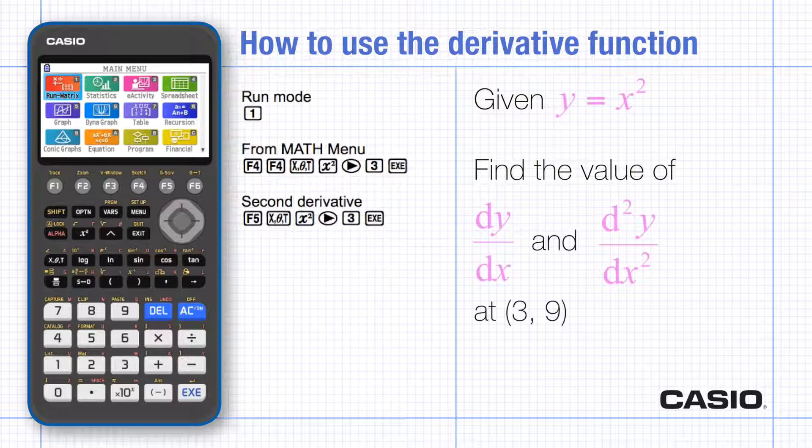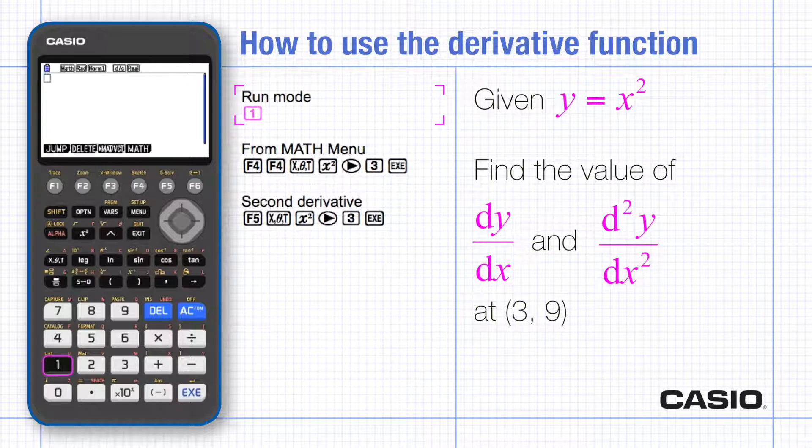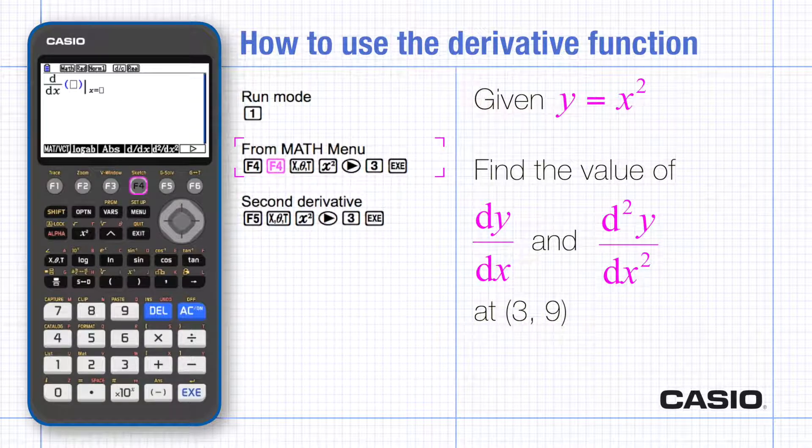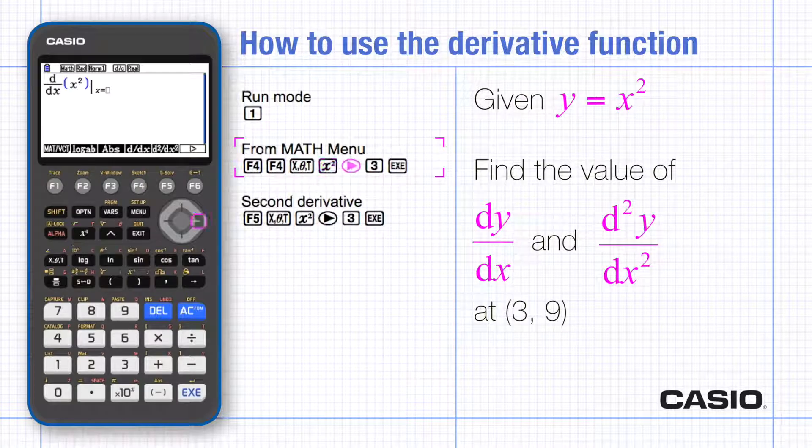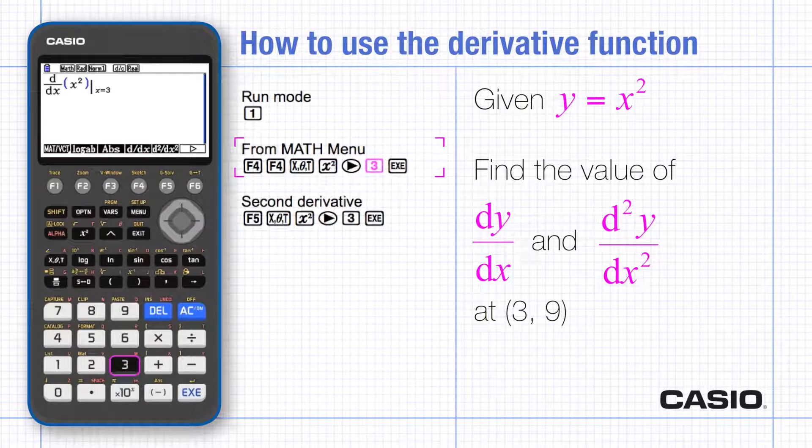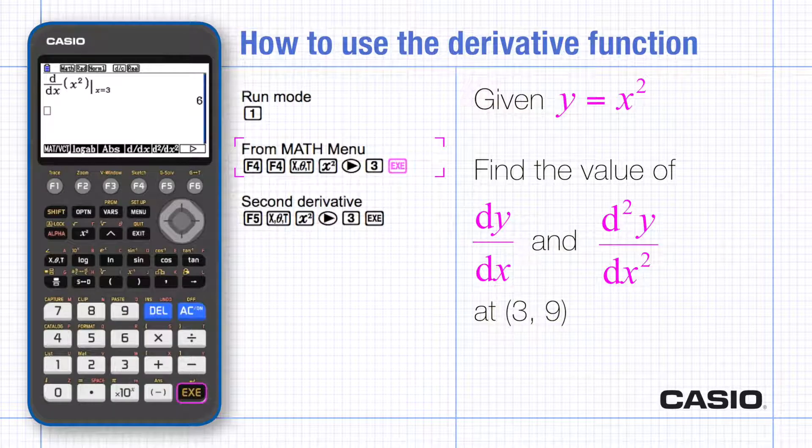In run mode choose the math menu and d by dx. Type the function using the x theta t key and scroll to the right to enter the x value for which the gradient is required.